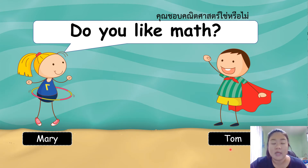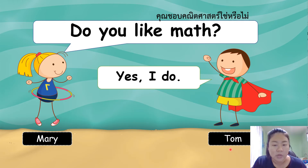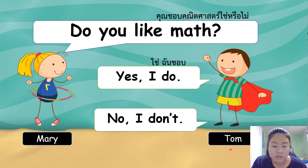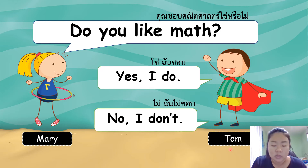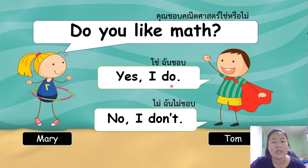ถ้าเขาถามว่าใช่หรือไม่ วิธีการตอบก็ควรจะมีสองแบบ เราก็เลือกตอบแบบใดแบบหนึ่งนะคะ. ถ้าหากเราชอบ เราก็ตอบ yes I do. แต่ถ้าหากว่าเราไม่ชอบนะคะ เราก็ตอบ no I don't — ต้องออกเสียงสั้นนะคะ I don't. อย่านำมาสลับกันด้วยนะคะ ใช้อย่างใดอย่างหนึ่ง: yes I do หรือ no I don't ค่ะ.